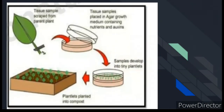Now look at this diagram — ek leaf hai, leaf ke cells ko liya ja raha hai aur unko culture medium mein daala ja raha hai. Nutrients se cells bante hain, phir unko hormones wale medium mein transfer karte hain. Usake baad chhote-chhote plantlets nikalte hain, jo laboratory mein grow kiye jaate hain, aur jab thode mature ho jaate hain toh field ya garden mein laga diye jaate hain. Yeh tha tissue culture ka process.